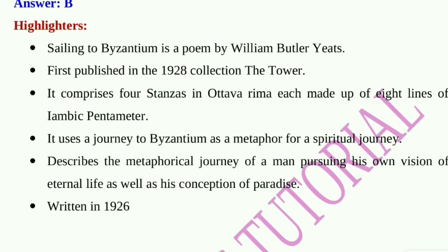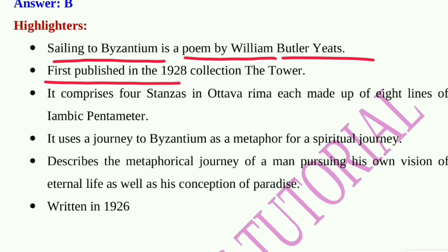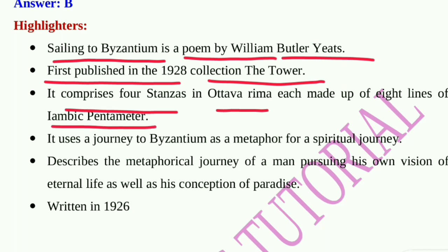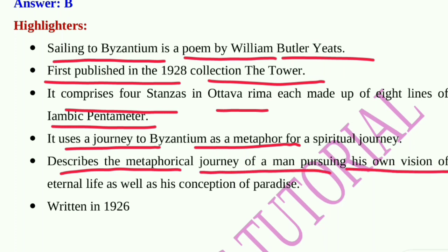Sailing to Byzantium is a poem by W.B. Yeats, first published in the 1928 collection The Tower. It comprises four stanzas in ottava rima, each made up of eight lines of iambic pentameter. It uses a journey to Byzantium as a metaphor for a spiritual journey, describing a man pursuing his own vision of eternal life and paradise. It was written in 1926.